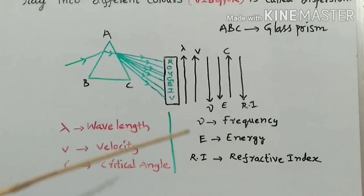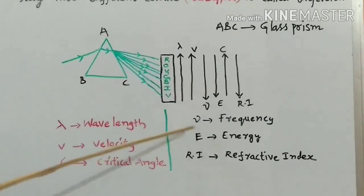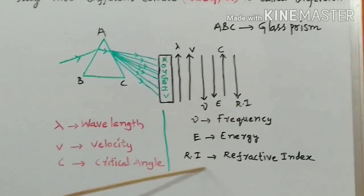And nu is frequency, E is energy, and RI is refractive index. These decrease from red to violet.